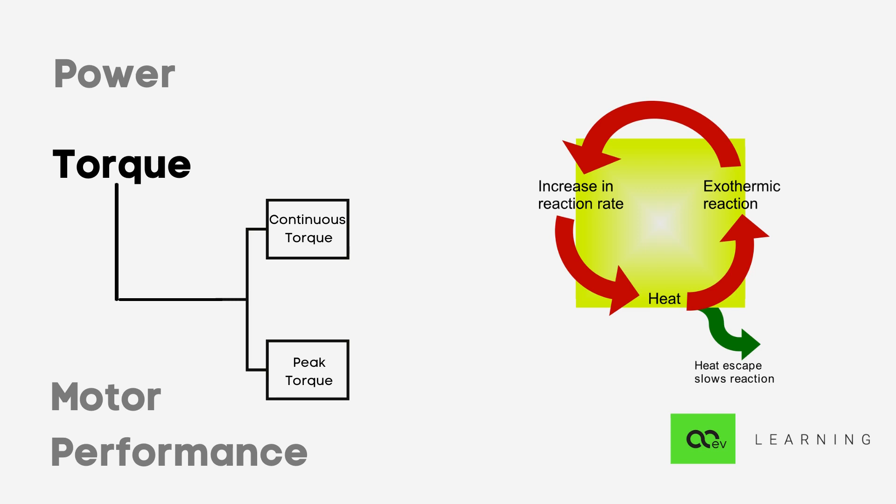The thermal runaway is a phenomenon that is accelerated by increased temperature, in turn releasing energy that further increases the temperature. Thermal runaway occurs in situations where an increase in temperature changes the condition in a way that causes a further increase in temperature, often leading to a destructive result. It is a kind of uncontrolled positive feedback.